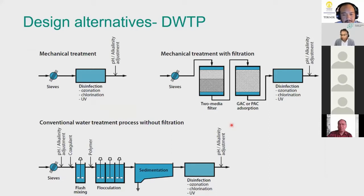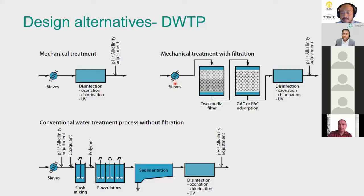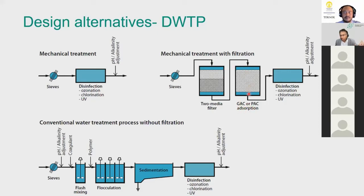A figure of design alternatives is presented. The simplest option is mechanical treatment with a screen followed by disinfection, typically used for groundwater. For surface water from a lake that is relatively clean with few particles, water can be sent through a two-media filter — two types of sand of different sizes — then through granular or powder activated carbon to remove remaining organic matter, followed by disinfection.